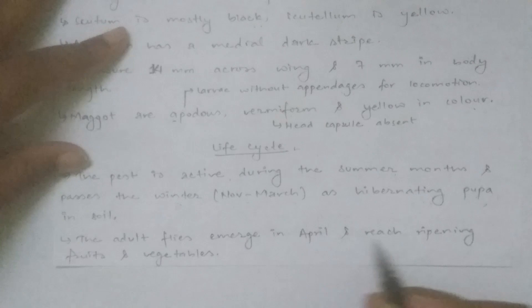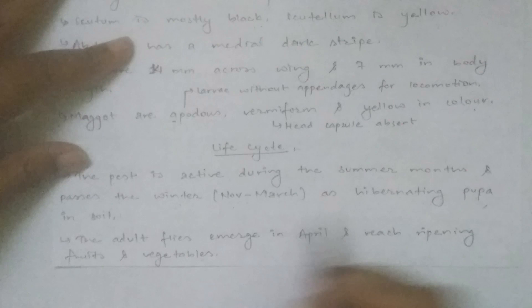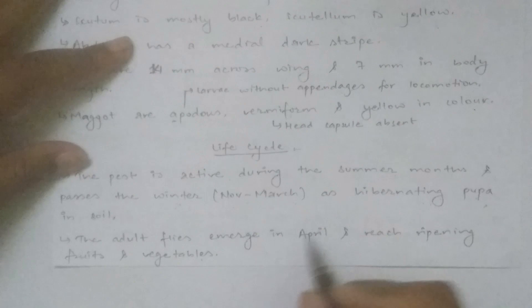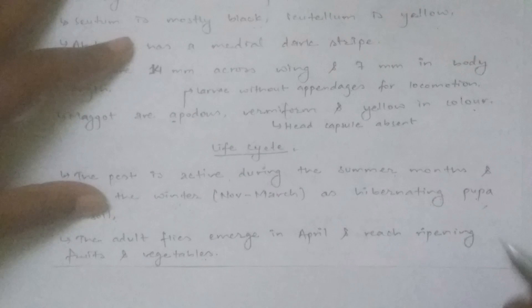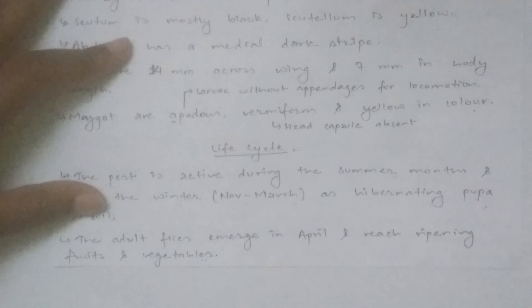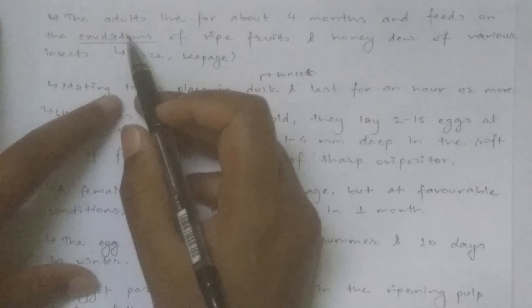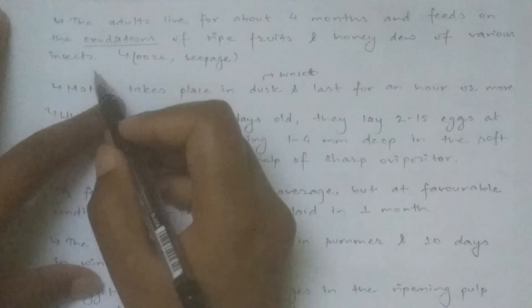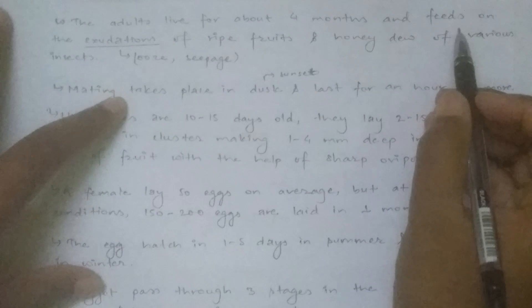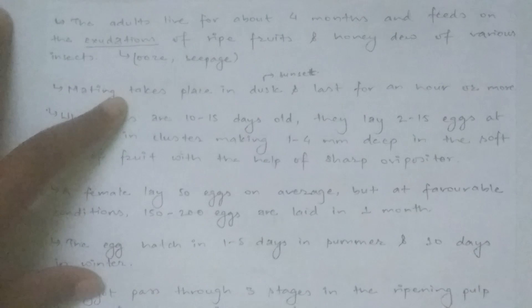Adult flies emerge in April and infest ripening fruits and vegetables. The adults live for about 4 months and feed on oxidizing ripe fruits and honeydew of various insects.